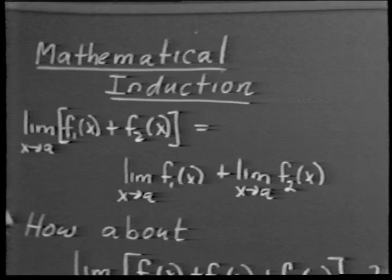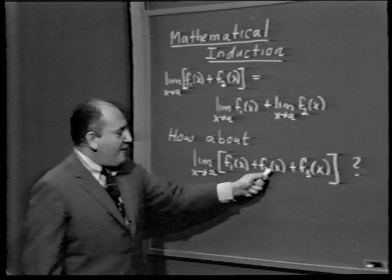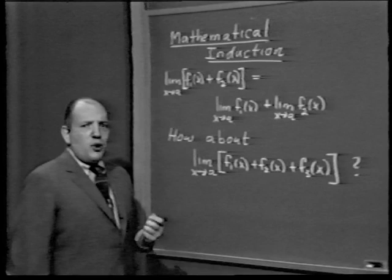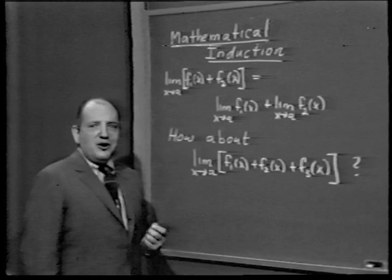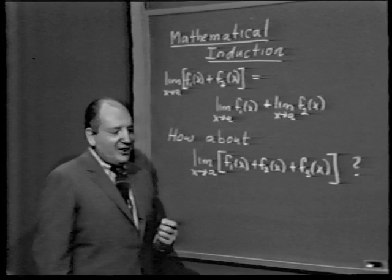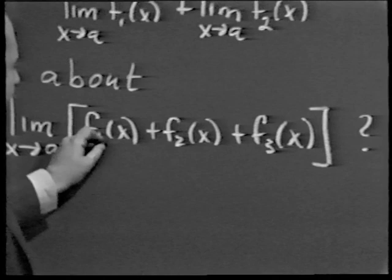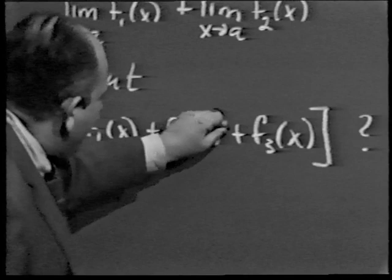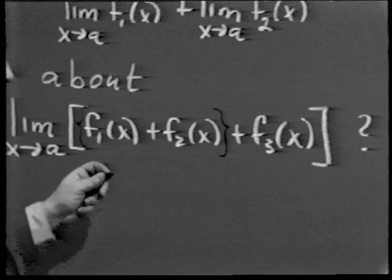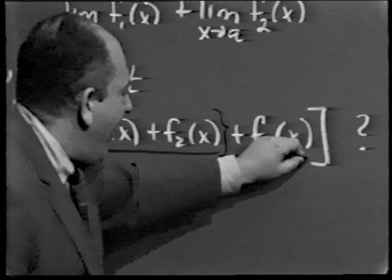The question now is: how about the limit as x approaches a of f1(x) plus f2(x) plus f3(x)? To tackle a problem like this, we do what is so often done in any mathematical logical procedure — we try to reduce an unfamiliar problem to a familiar problem which has already been solved. Since the sum of two functions is again a function, we can write this expression as the sum of two functions: f1(x) plus f2(x) as one function, and f3(x) as another.